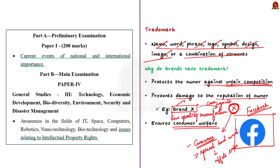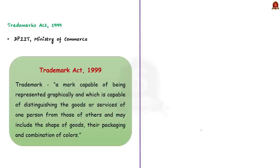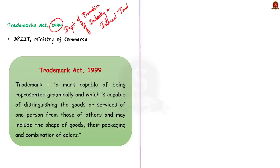In India, trademarks are governed under the Trademarks Act 1999. It comes under the Department of Promotion of Industry and Internal Trade under the Ministry of Commerce. A trademark is defined in the Trademarks Act 1999 as a mark capable of being represented graphically and which is capable of distinguishing the goods or services of one person from those of others. It may include the shape of goods, their packaging, and combination of colors. Such a trademark may include signatures, names, labels, headings, etc.